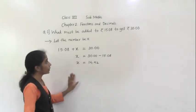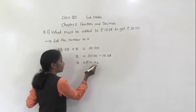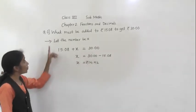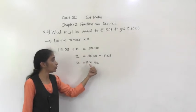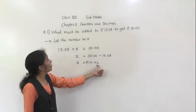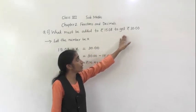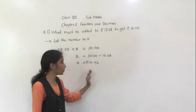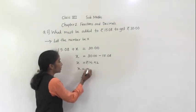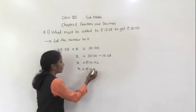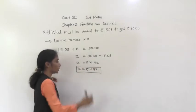What we got for the answer? 14.92. Now it is given in rupees, so rupees 14.92. So what must be added to rupees 15.08 to get rupees 30? We got X is equal to rupees 14.92.